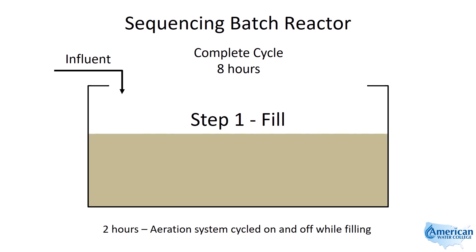SBRs are generally used in systems with relatively low flows, typically 1 MGD or less, but they can be designed to handle more than 100 MGD if required. A properly programmed sequence will create the conditions that allow for biological removal of nitrogen and phosphorus.